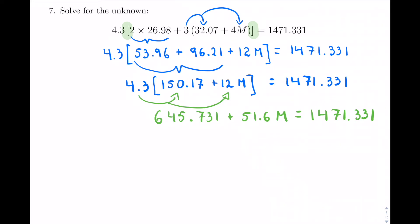Now I'm solving for the capital M, so I can take now my 645, move it over, and I will have 51.6M equals, so 1471 minus 645.731.